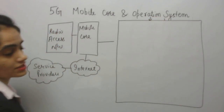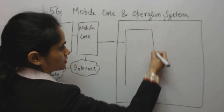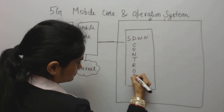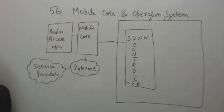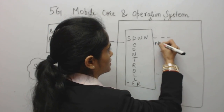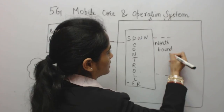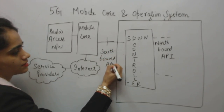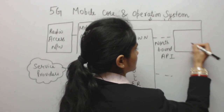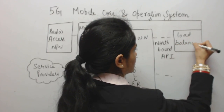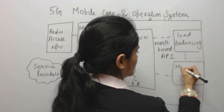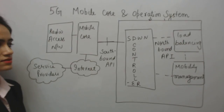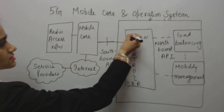Now let's discuss about the operation system. The mobile core is connected with a controller called SDWN — the SDWN controller. This controller uses a northbound API on one side and a southbound API on the other. These are connected to a load balancer. The load balancer performs load balancing and can also perform the function of mobility management. These are the main entities in the operation system.